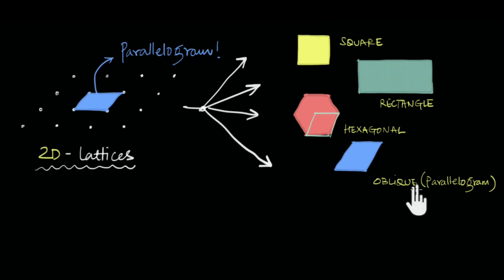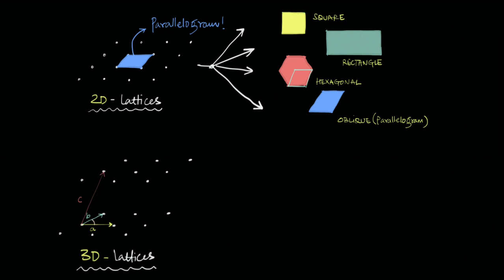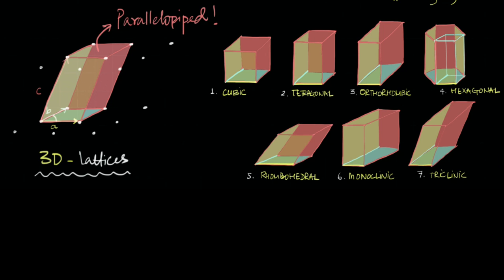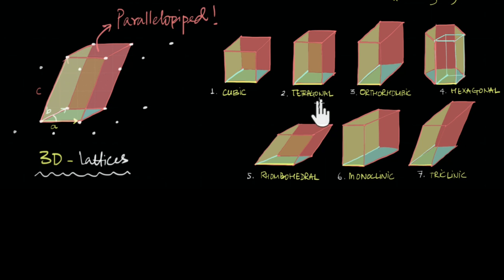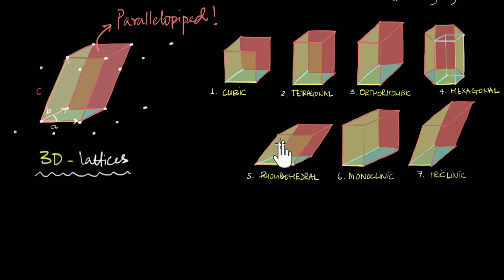Similarly, in three-dimensional lattices the smallest possible unit cell is a parallelepiped, and by tinkering with the symmetry of this parallelepiped it turns out there are seven fundamentally different shapes having different symmetries that could fully cover a 3D volume only via translation. Based on symmetry these shapes have been given names: cubic, tetragonal, orthorhombic, hexagonal, rhombohedral, monoclinic, and triclinic. Of course you can have bigger cubes and smaller cubes and thicker and thinner tetragonals.